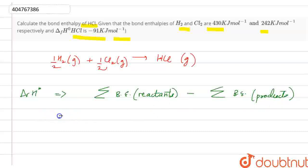So here, how much is the enthalpy of the reactants? If we talk about the reactants, the value of half into H2, the value given is 430 kJ. So half into 430 plus Cl2, half into 242.